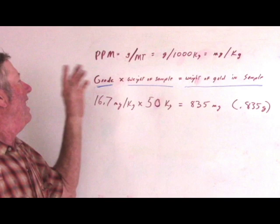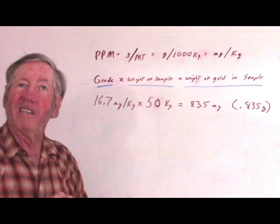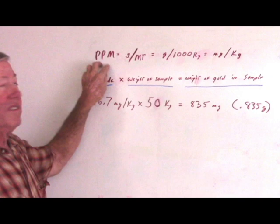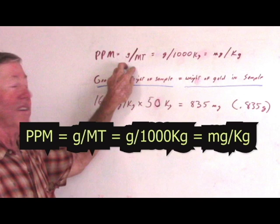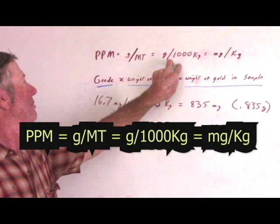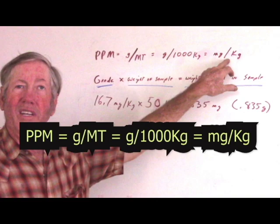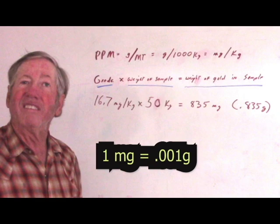We're using Ryan's fifty kilogram test sample for a reason. Remember I said I used fifty kilograms to make the math easier? This is why. I get results in parts per million from the lab. Now, parts per million is also grams per metric ton, grams per thousand kilograms. That's what a metric ton is. It's not two thousand pounds, it's like two thousand two hundred and ten pounds. Which also equals milligrams per kilogram. These all units are identical. They're just expressed differently.